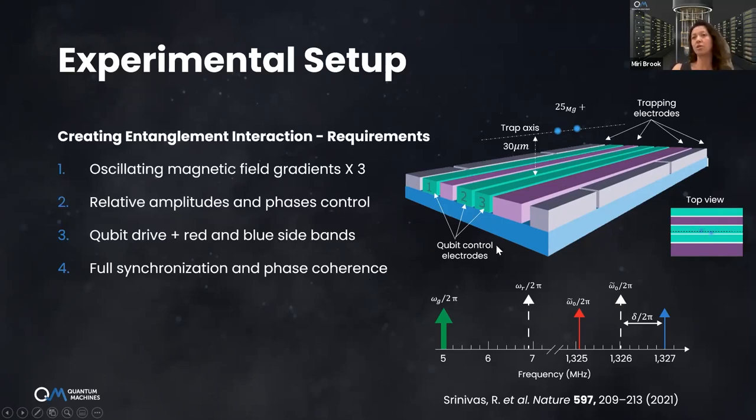So what do I need from my control system to implement a scheme based on these frequencies? I'm not going into the details of how exactly it creates the entanglement, but it is based on the components I showed you before of red and blue sidebands. This is the displacement gradient which makes the up and down state allow sideband transitions. It's all the components.